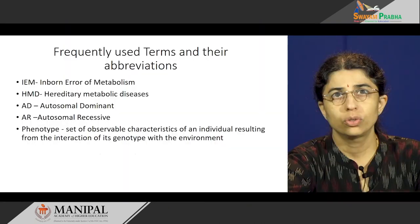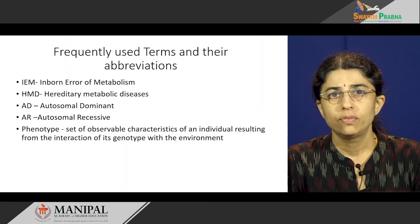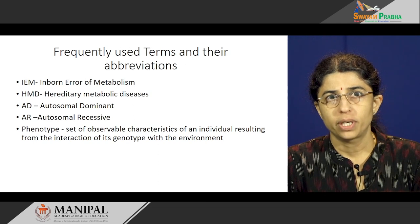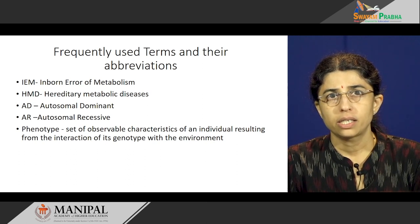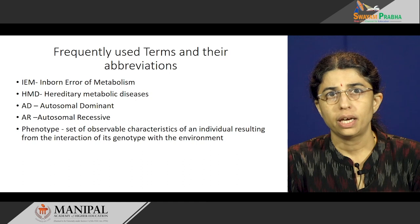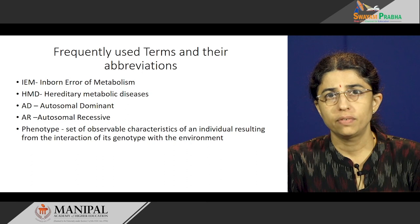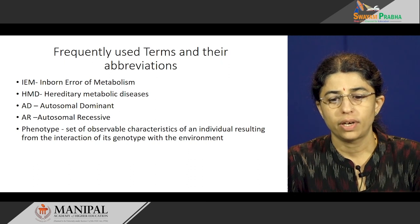Let us quickly go through the frequently used terms and their abbreviations which you will come across in today's discussion. IEM stands for Inborn Error of Metabolism, HMD is Hereditary Metabolic Diseases, AD is Autosomal Dominant, AR is Autosomal Recessive. Phenotype is a set of observable characteristics of an individual resulting from the interaction of its genotype with the environment.